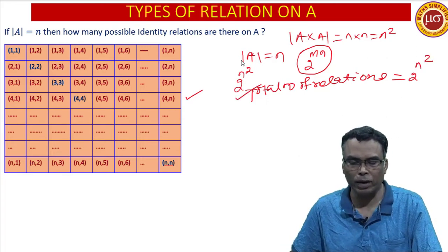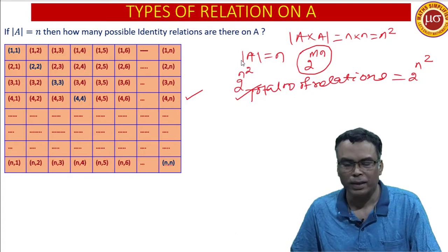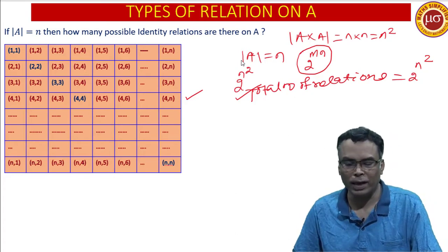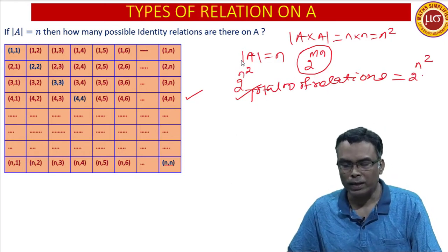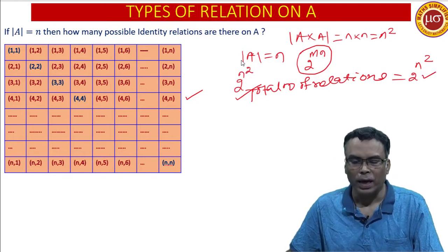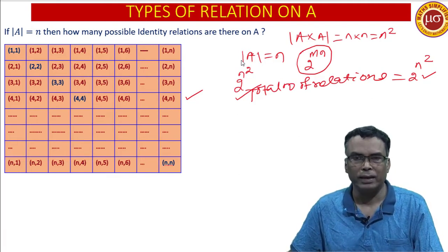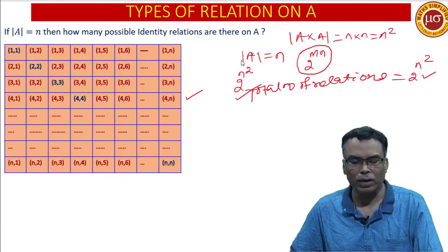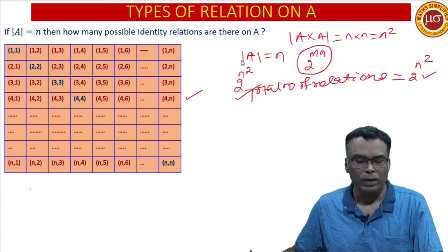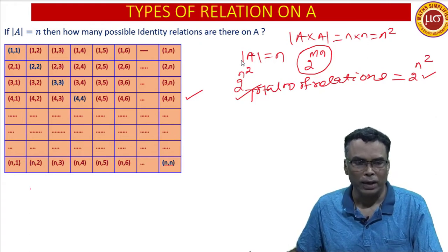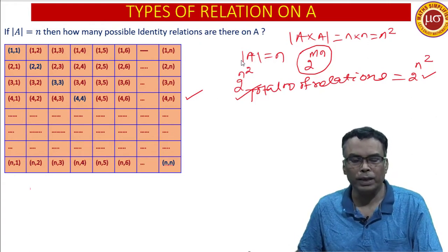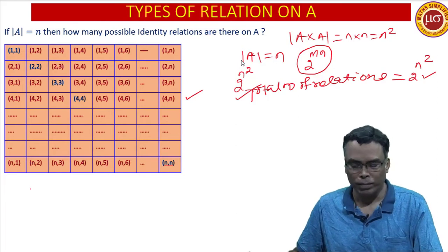Remember this — total number of relations is 2 to the power N square — for short questions in your board or entrance examinations. Out of these 2 to the power N square relations, how many relations are identity? Come to the concept of identity relation.